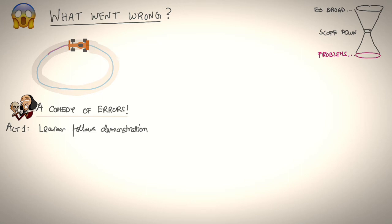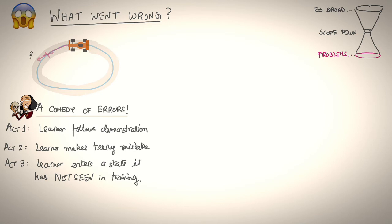Act one, the learner seemed to be following the demonstration perfectly well when it began. Act two, at some point, the learner makes a mistake. It's fallible just like any of us and makes a teeny epsilon mistake. It goes off the expert trajectory. Act three, the learner enters a state, as a result, that it has not seen at training time.